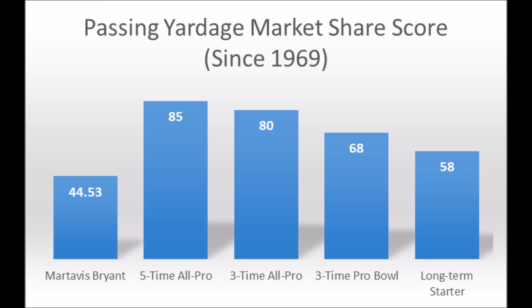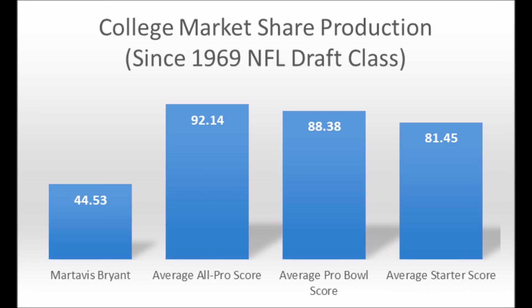When we look at the averages for the position — the average all-pro score, average Pro Bowl score, and average starter score — Bryant is well below what those averages are. When it comes to production data at Clemson, he was never the guy. He was more of a number-three wide receiver, a complementary piece, and was never the main cog of the passing offense.